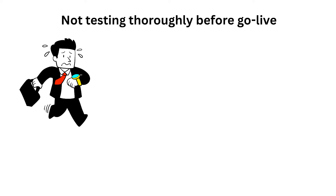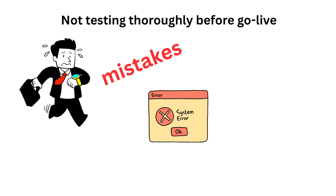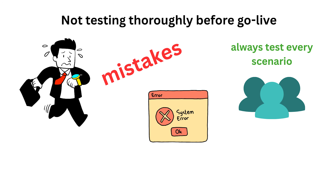Mistake 21: Not testing thoroughly before go-live. Rushing through testing is one of the biggest rookie mistakes — skipping end-to-end testing can cause critical errors once the system goes live. Always test every scenario: positive, negative, and edge cases, first in the QA environment. Involve business users early to catch issues before deployment; a few extra days of testing can save weeks of post-go-live chaos.